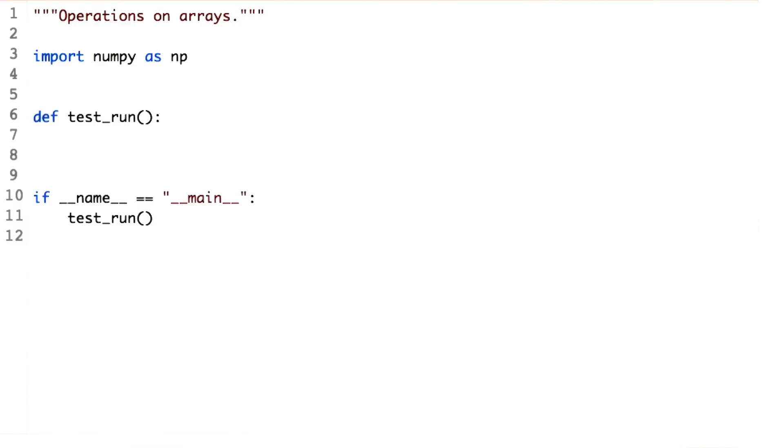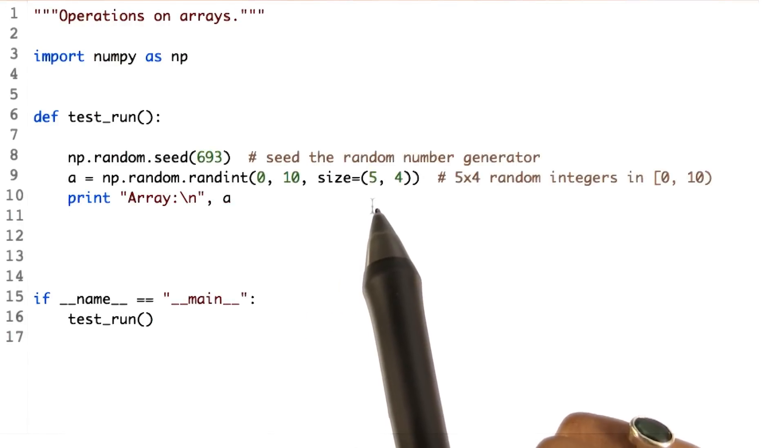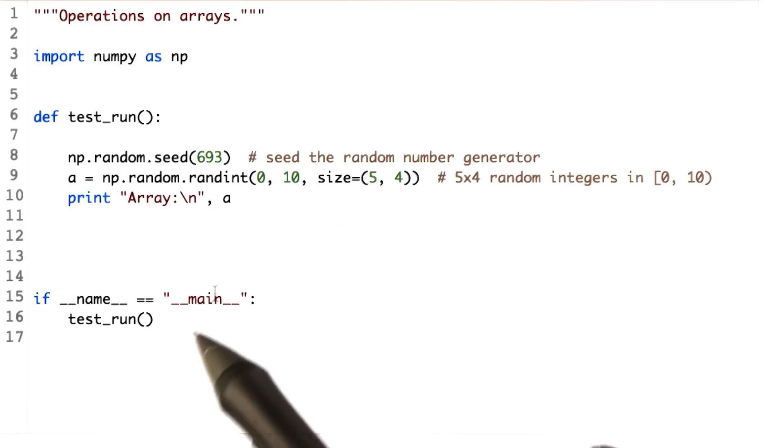Next, you will see how to perform various mathematical operations on ndarrays. Let's use a random array of integers. Let's create an array with shape five rows and four columns. Let's see the output.